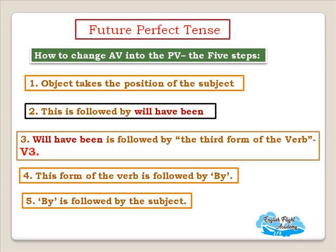Moving on to future perfect tense — how to change active voice of future perfect tense into passive voice. Once again, we have five steps: the object takes the position of the subject; this is followed by 'will + have + been'; 'will have been' is followed by the third form of the verb (Verb 3); and this form of the verb is followed by 'by,' which is followed by the subject.